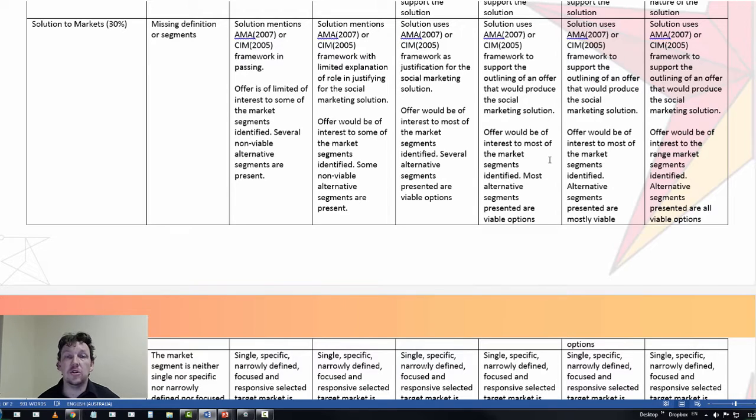Now a solution to markets, the top of the pack is a case of understanding and applying one of the definitions of marketing, and that is an adaptation and an adoption process. How will you outline an offer that would produce that social marketing solution? So you said there's a problem, you said marketing can provide a solution. Now you are outlining how one of the two definitions will enable you to deliver that solution.